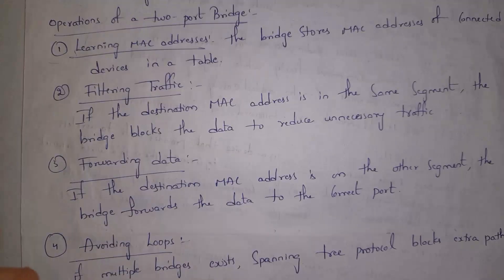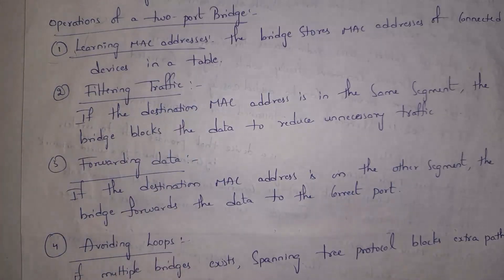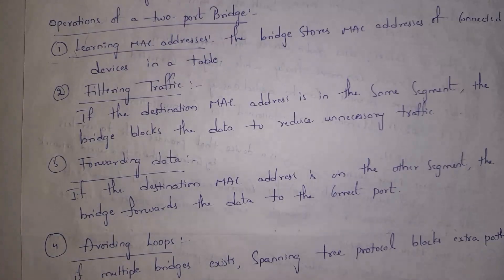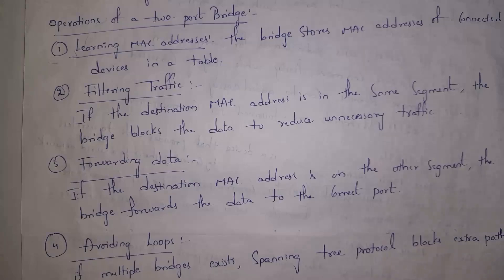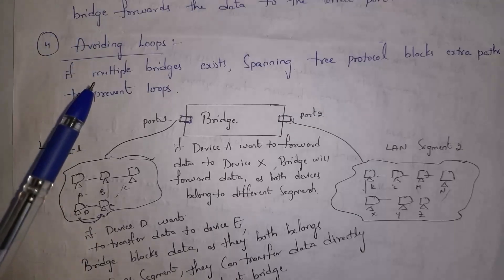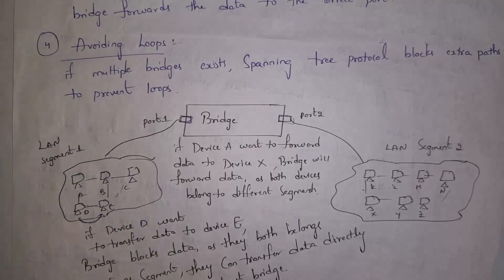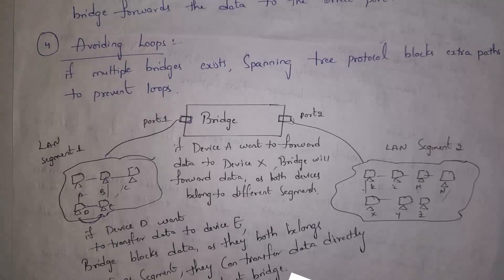Operations of a two-port bridge: first, learning MAC addresses — the bridge stores the MAC address of each and every device. Second, filtering traffic — if the receiver's MAC address is within the same LAN, the bridge blocks the data. Third, forwarding data — if the receiver's MAC address belongs to a different segment, the bridge forwards the data. Fourth, avoiding loops — if multiple bridges are used, they follow spanning tree protocol, choosing only one bridge route and blocking all remaining routes, ensuring data reaches the receiver fast without any loop.